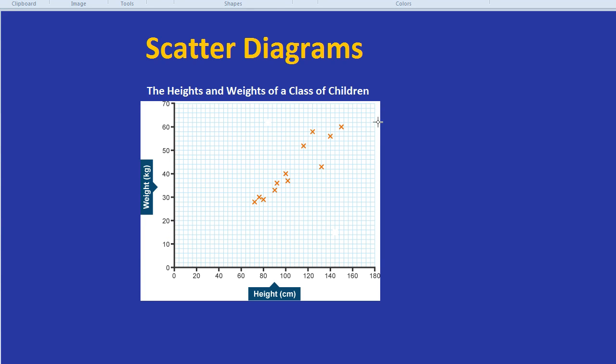The first thing to look at when you see a scatter diagram, like this diagram of the heights and weights of a class of children, is we need to think of the correlation of the points. How are they linked? As one of these aspects, for example the height, gets more and more, what happens to the other aspect, sometimes called the variable? Does that go up as well or does that go down? So we need to think about the correlation.